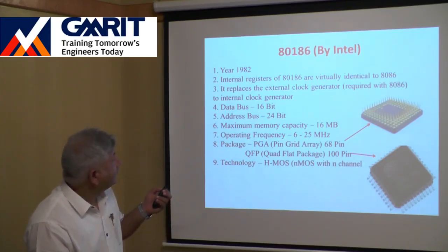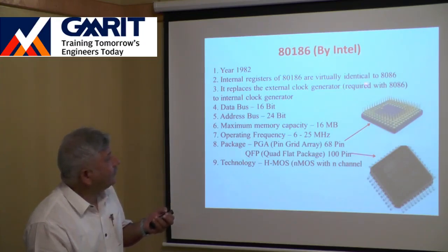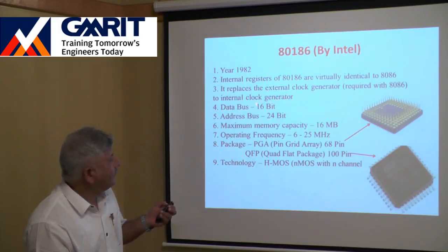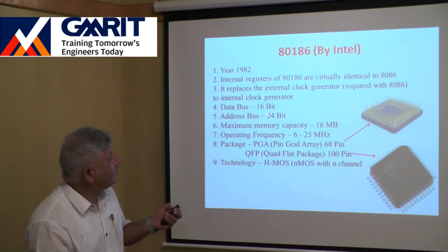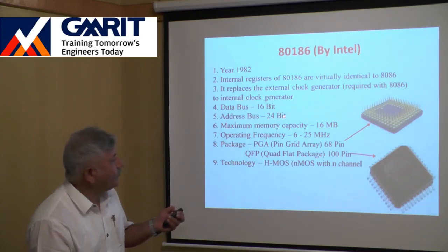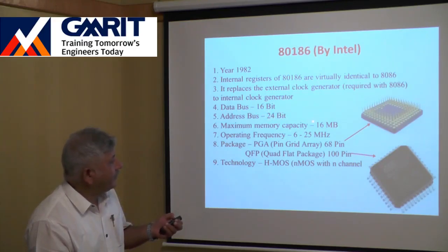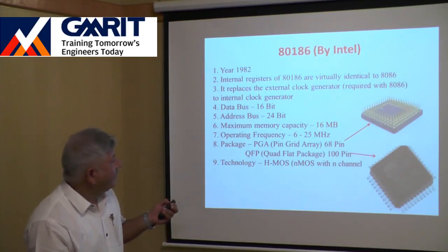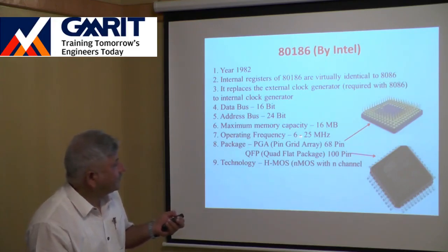The 80186 maintained a 16-bit data bus, but the address bus was increased from 20-bit to 24-bit, allowing connection of a maximum of 16 MB of memory. The operating frequency ranged from 6 to 25 MHz.